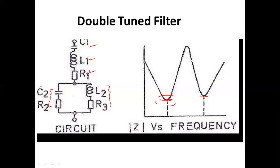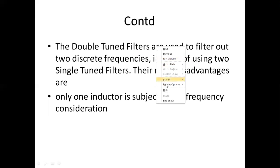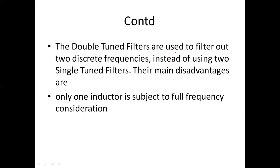The two frequencies are different from each other, so two frequencies can be filtered out — hence it is called a double tuned filter. The double tuned filter is used to filter out two discrete frequencies instead of using two single tuned filters.